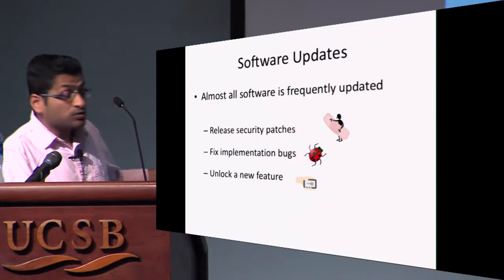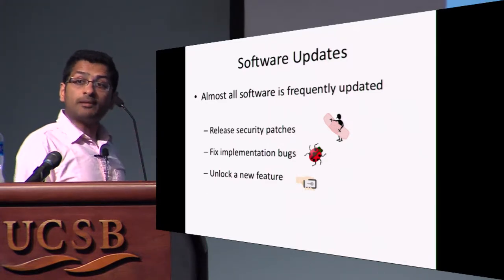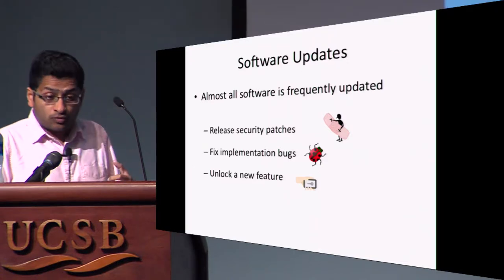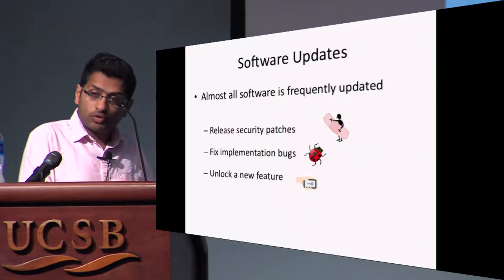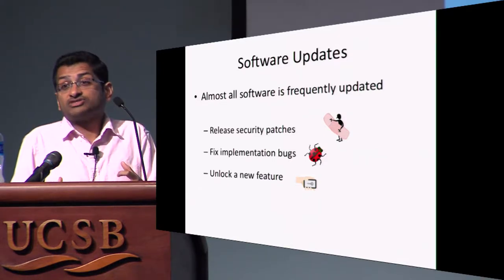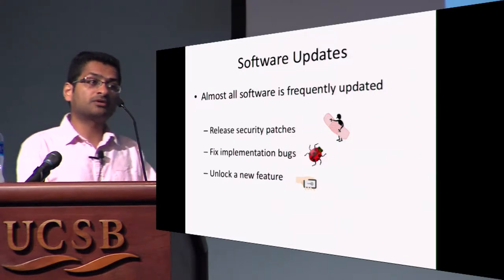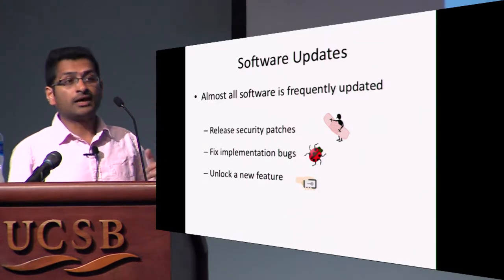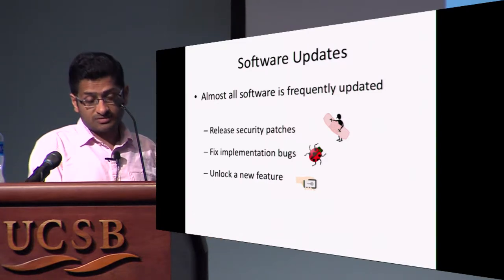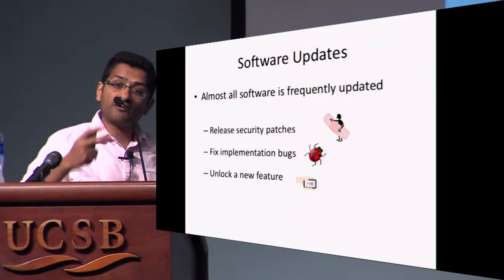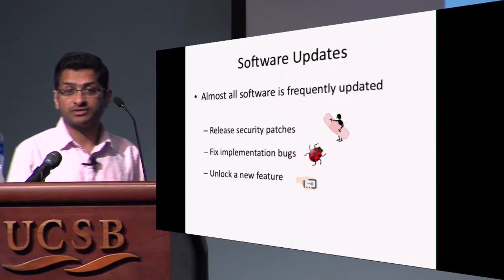If you were doing the same thing in the obfuscated setting — let's say you had a program that was obfuscated and you wanted to apply an update — using known techniques, the person who gave you the software would have to generate a fresh copy of the updated program and give it to you. Typically on your computer an update is applied locally, but with obfuscated software the provider would have to re-obfuscate the fresh copy and give it to you. This is a problem, and this is what we want to change in this work.